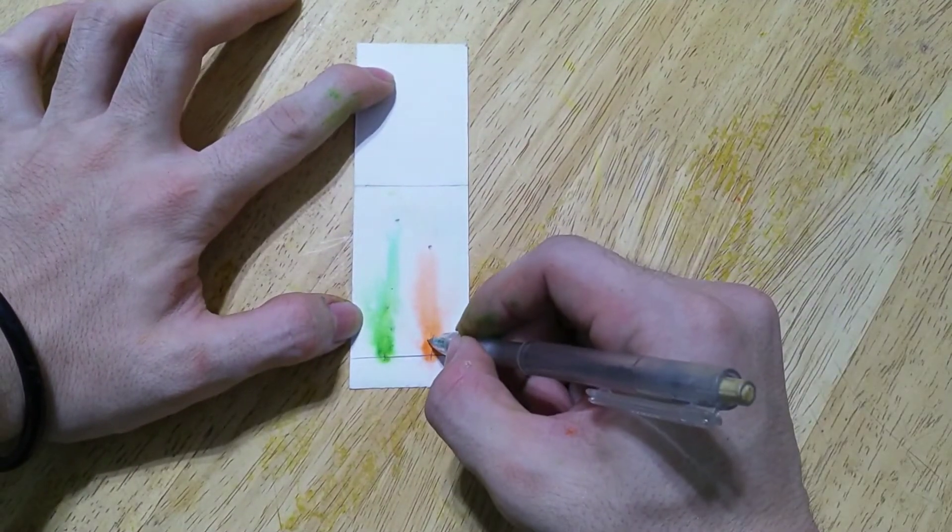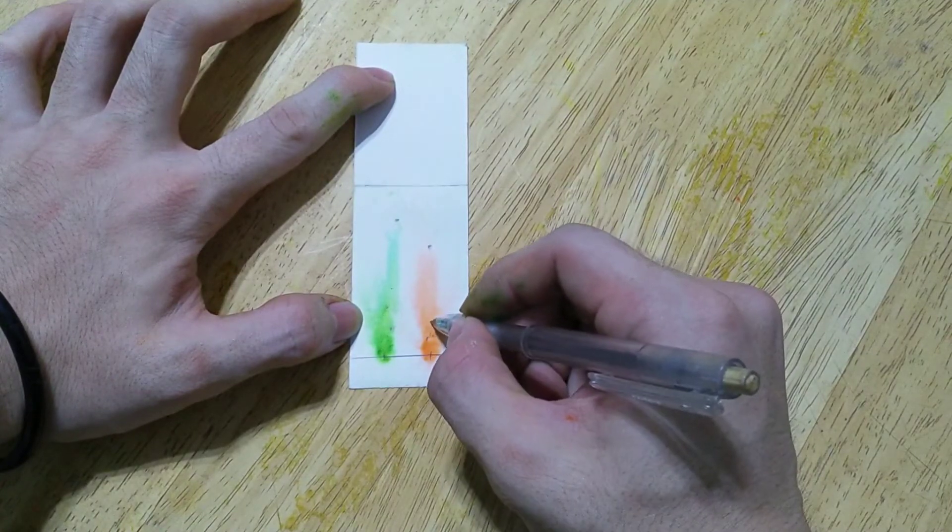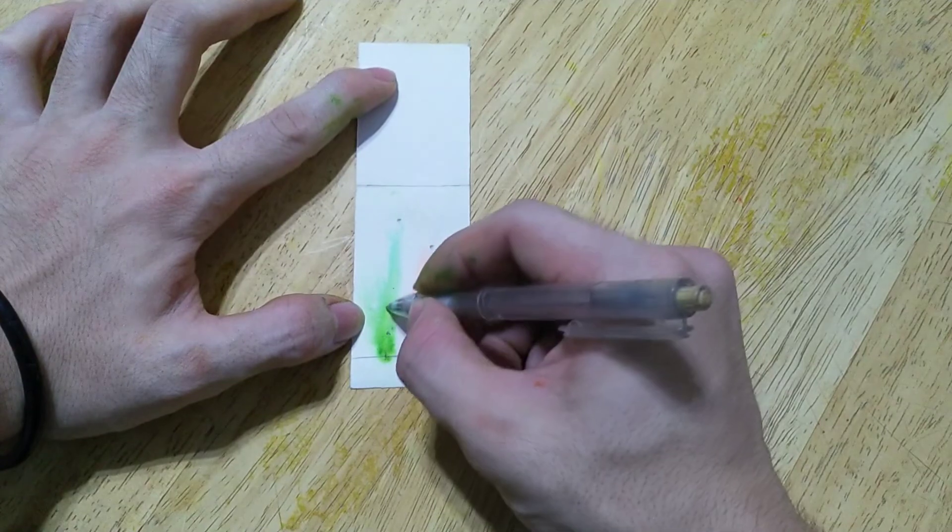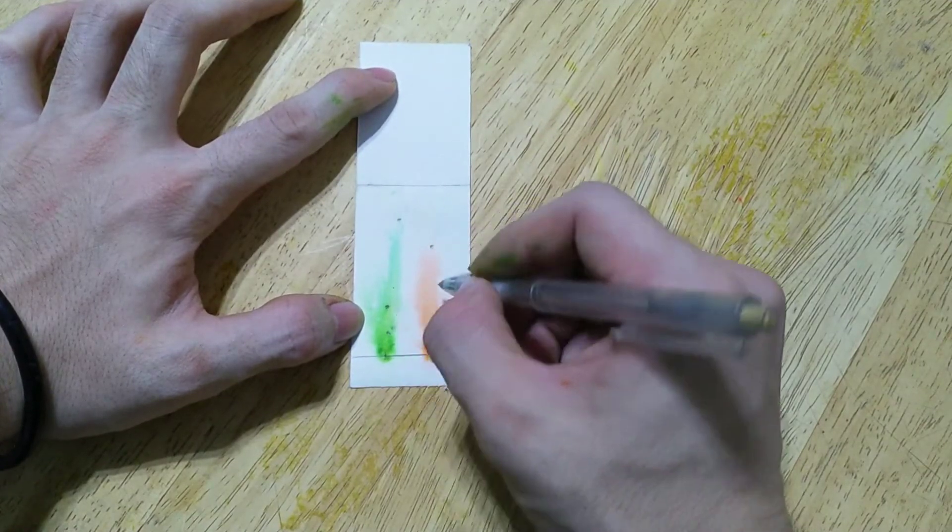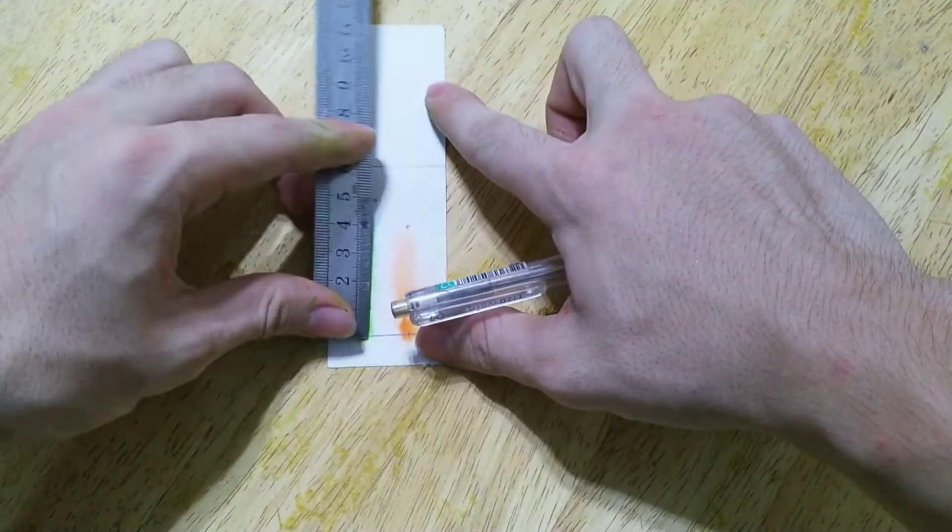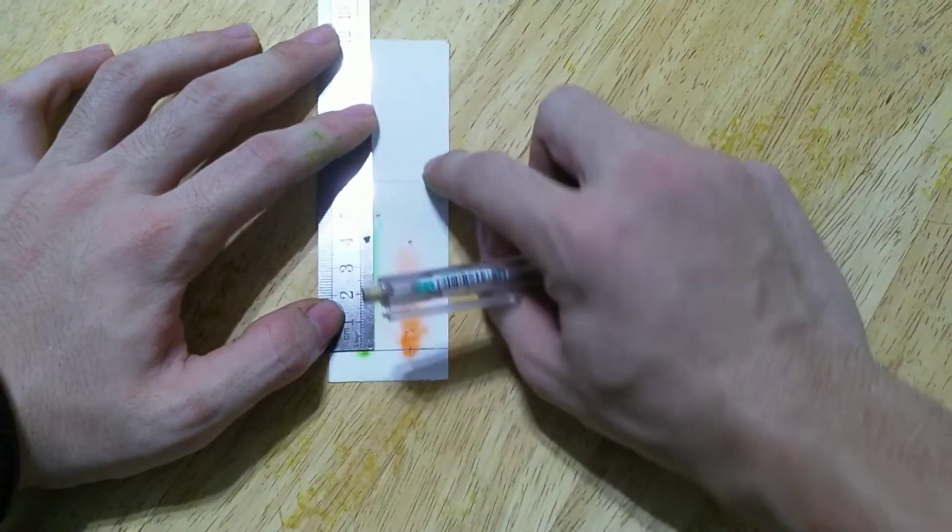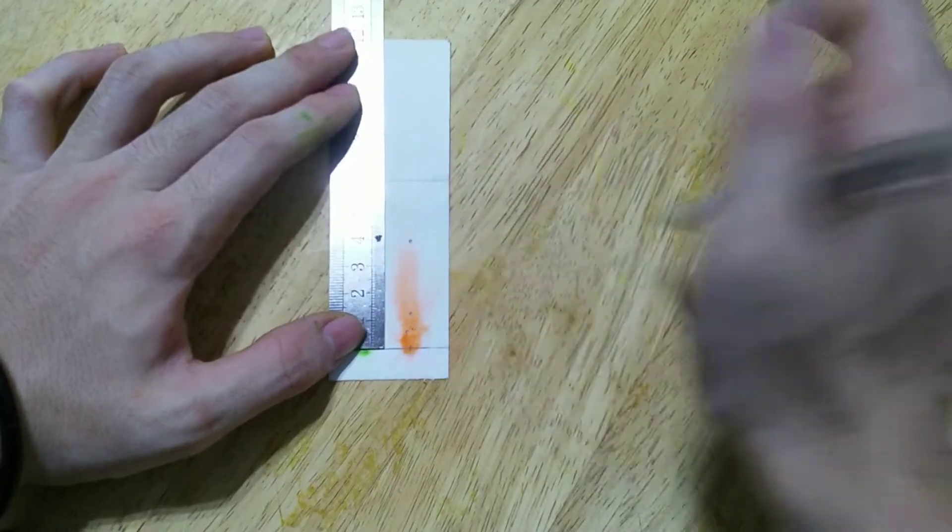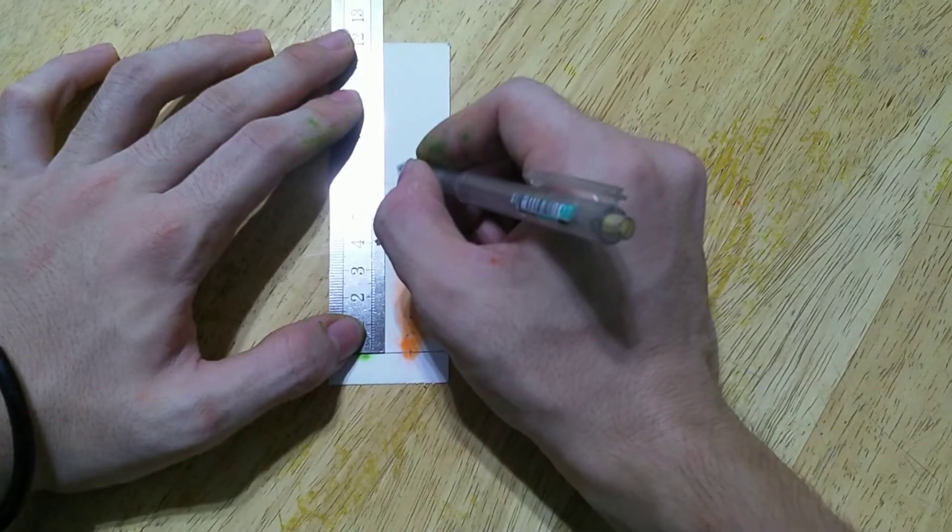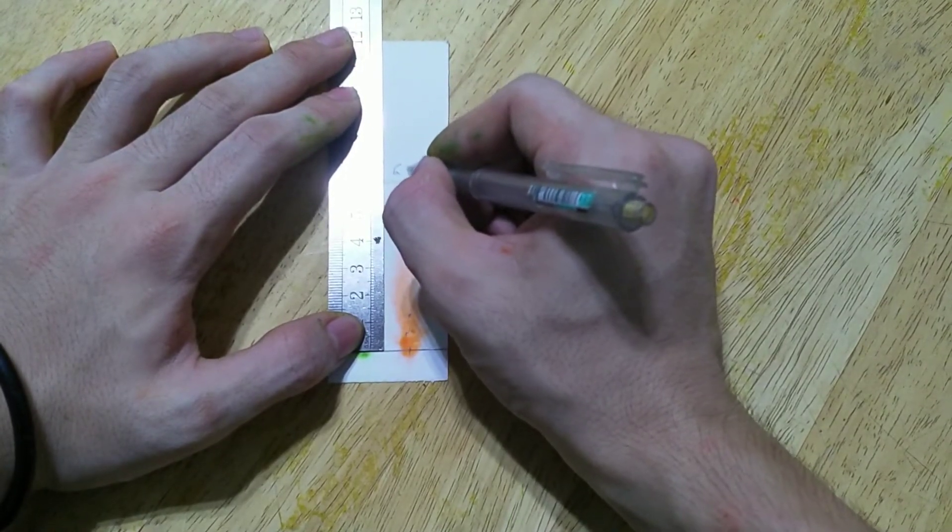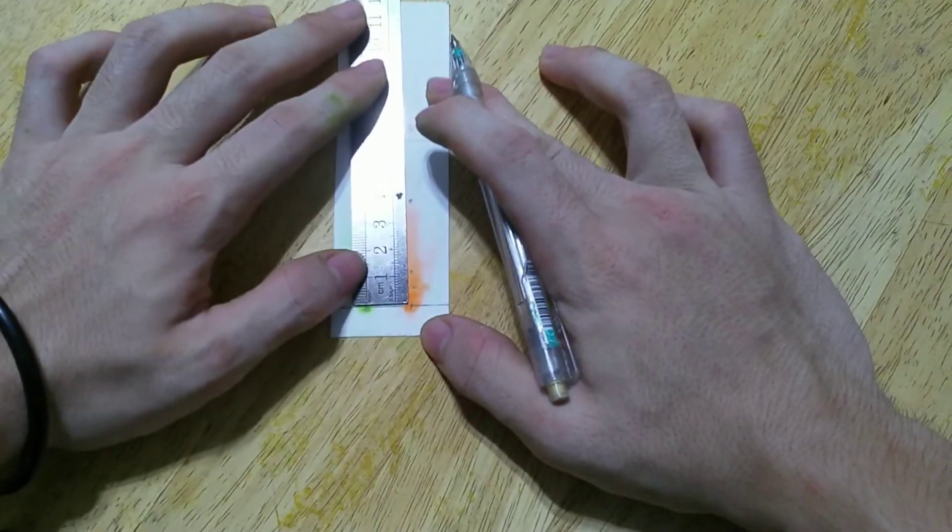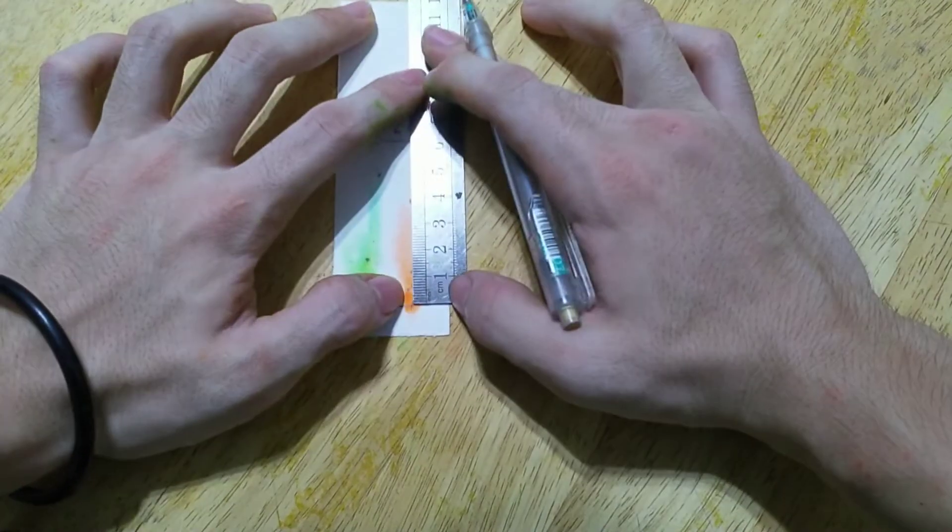So yeah you got one and then one here, here, here. So now take the ruler and measure the distance traveled from origin. So the distance traveled from the origin is 6.3cm and the first spot here is 0.5cm.